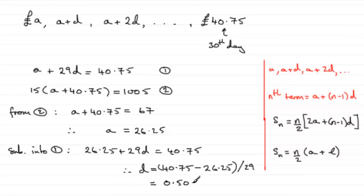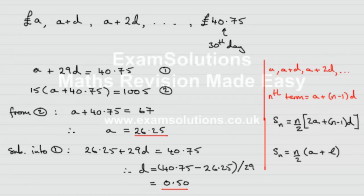So each day, basically, 50p was added on to the picker's wages, all right? So you've got A then as being 26.25 and D as being 0.5 or 0.50, all right?